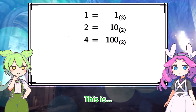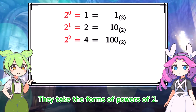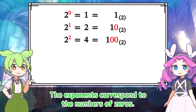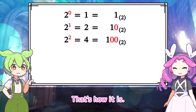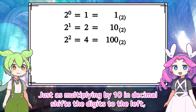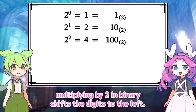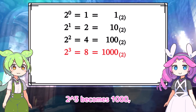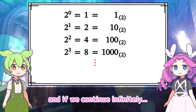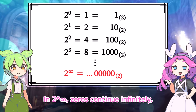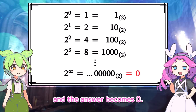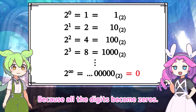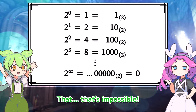Hmm, I see. They take the forms of powers of 2. The exponents correspond to the numbers of 0s. Just as multiplying by 10 in decimal shifts the digits to the left, multiplying by 2 in binary shifts the digits to the left. If we continue this, 2 cubed becomes 1000. And if we continue infinitely, in 2 to the infinity, 0s continue infinitely, and the answer becomes 0, because all the digits become 0s.